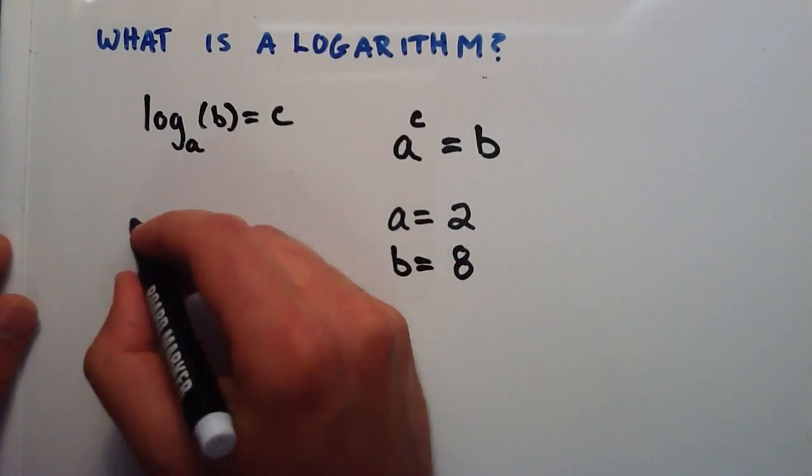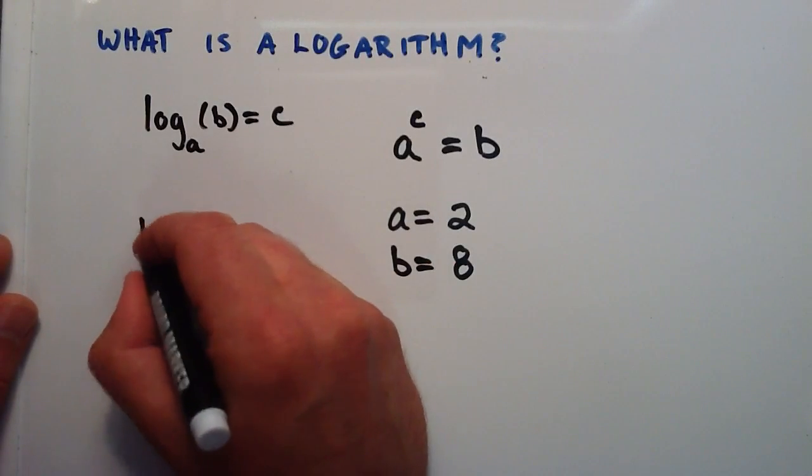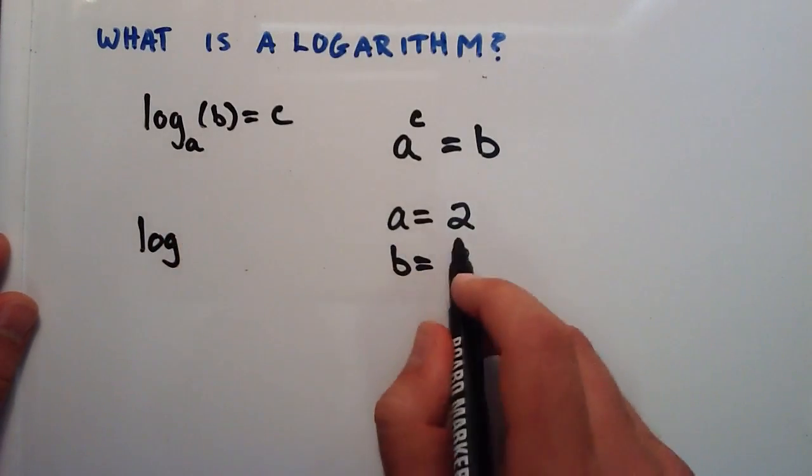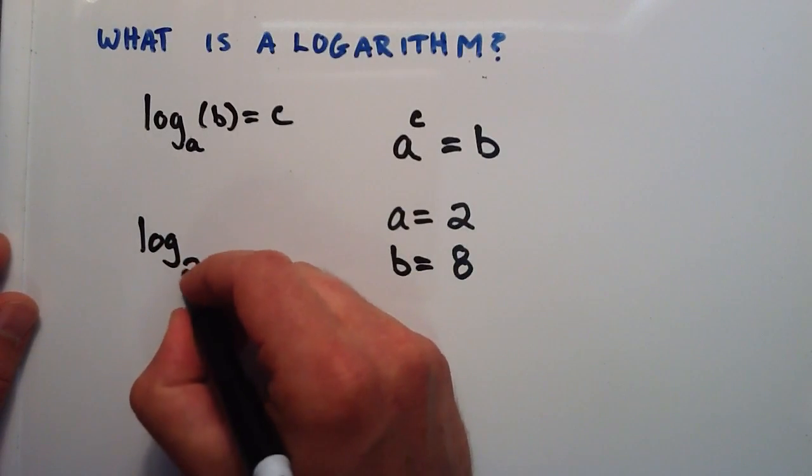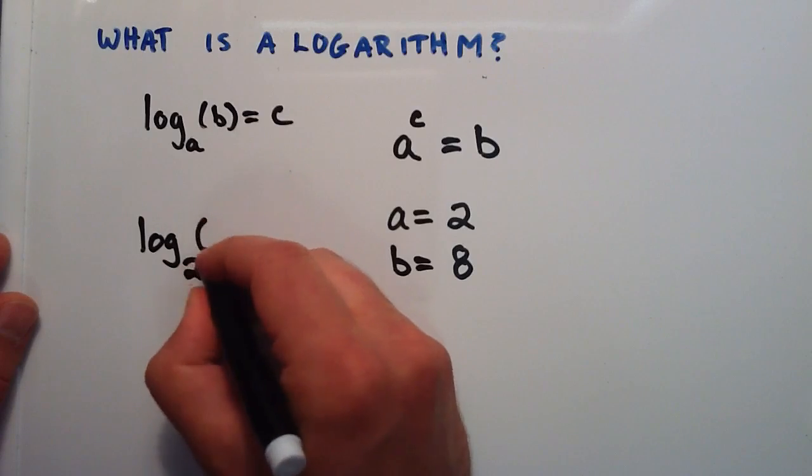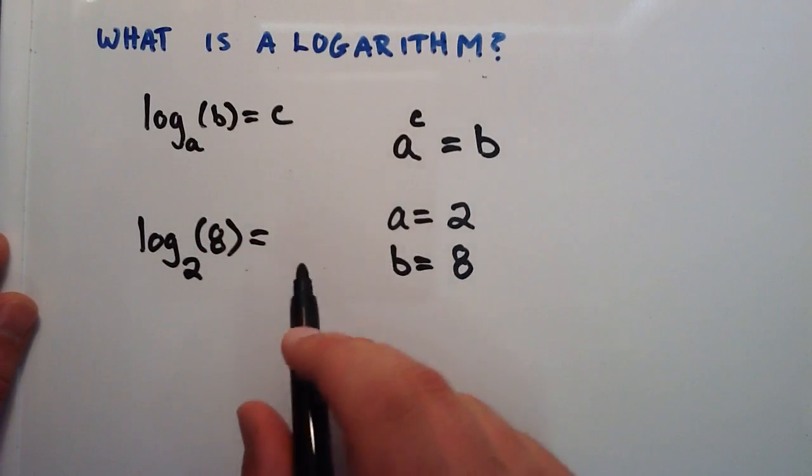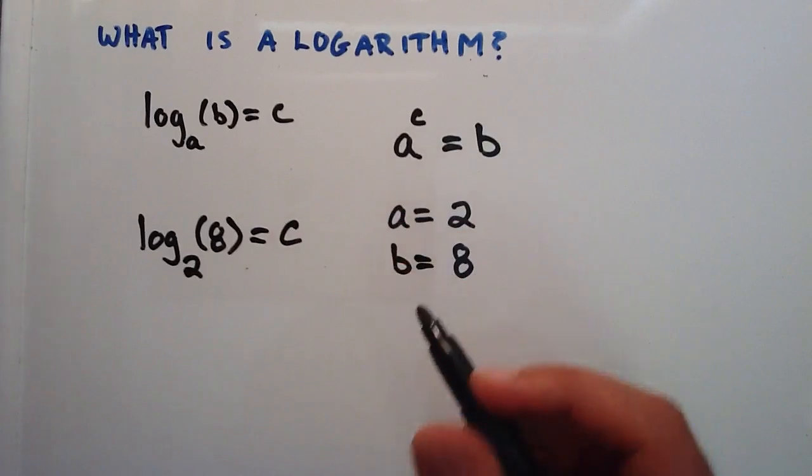Okay, so we're going to just rewrite this here. So we have log base A, so our base is 2. So log base 2 of 8 is equal to C. So what is C?